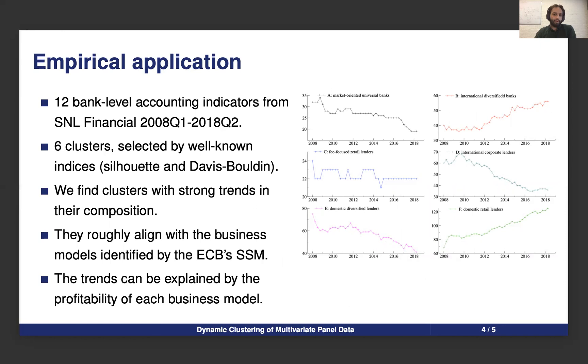Our empirical application consists of 12 accounting indicators over 10 years. We select the number of clusters based on methods that are well known in the clustering literature, and we find six clusters as an optimal number. Our results show that there are strong trends in the composition of the clusters that the dynamics of our model can pick up.